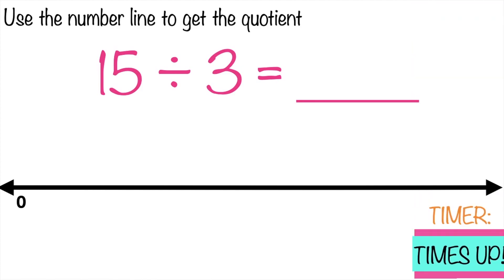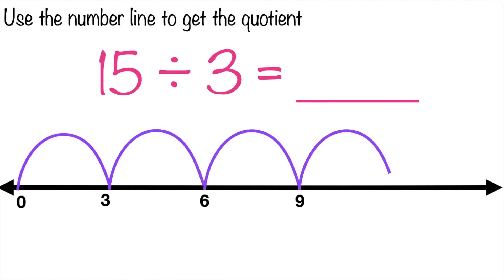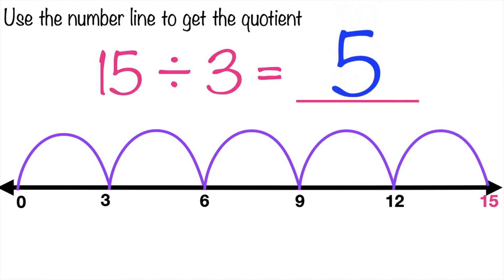Time's up. Let's see if your answer is correct. Again, we're going to skip count by 3 until we reach 15. Let's start at 0. 0, 3, 6, 9, 12, 15. So the quotient is 5. Why it's 5? Because we have 5 jumps. Is that clear? Let's have the next number.